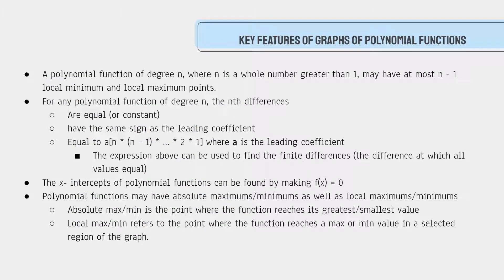Key features of graphs of polynomial functions. A polynomial function of degree n, where n is a whole number greater than 1, may have at most n minus 1 local maximum and minimum points. What that means is those little hills on top of a function can only occur n minus 1 times.